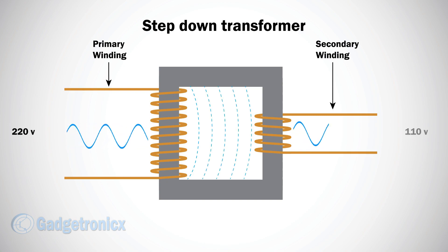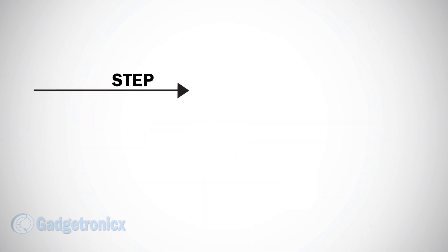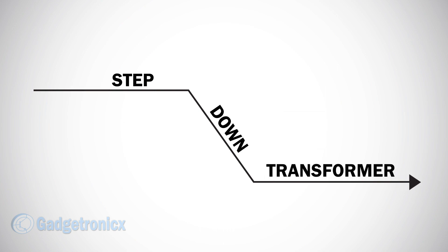Voltage induced at the secondary side will be 110V. Since the coil windings at the secondary side is half of the primary winding, the winding ratio will be 2 is to 1. Thus the voltage is stepped down from 220V to 110V. This is a step down transformer.